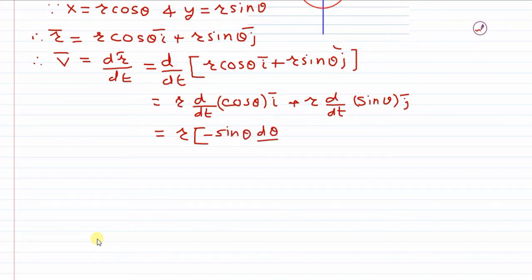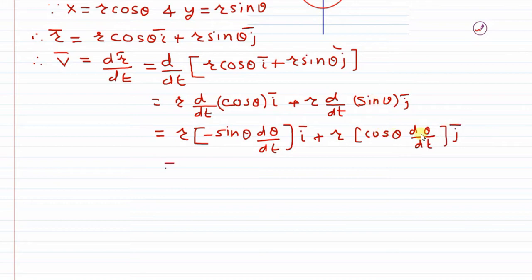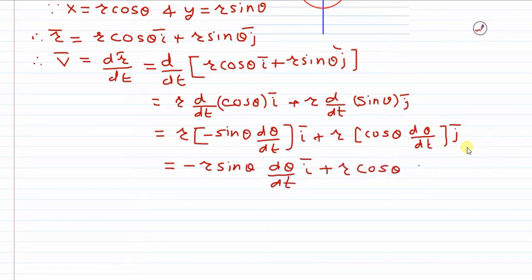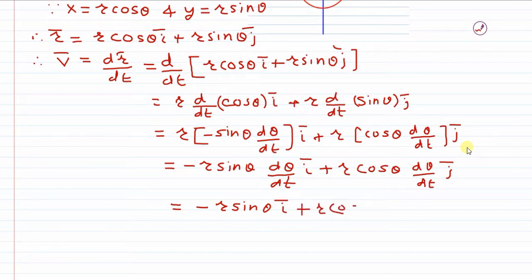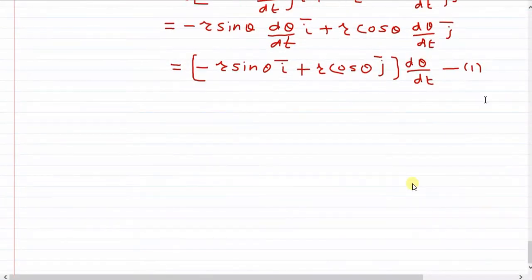The derivative of cos theta is minus sin theta times d theta by dt, and the derivative of sin theta is cos theta times d theta by dt. After simplification, this gives minus r sin theta times i plus r cos theta times j, multiplied by d theta by dt, which is nothing but the angular velocity omega — the rate of change of angular displacement.